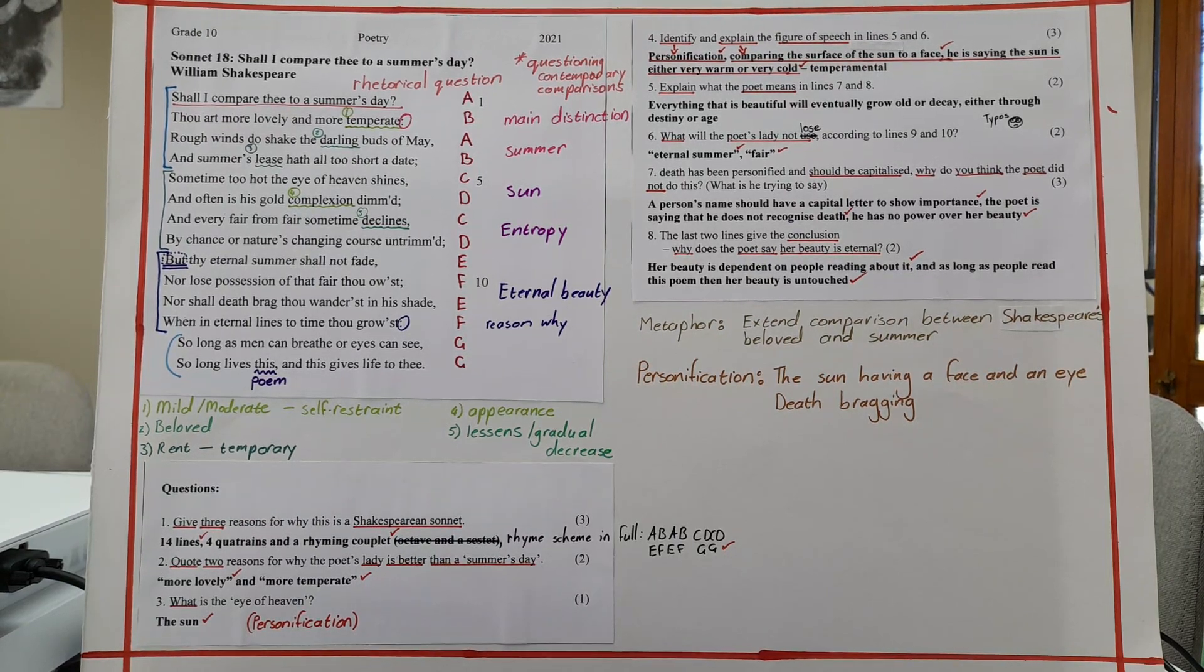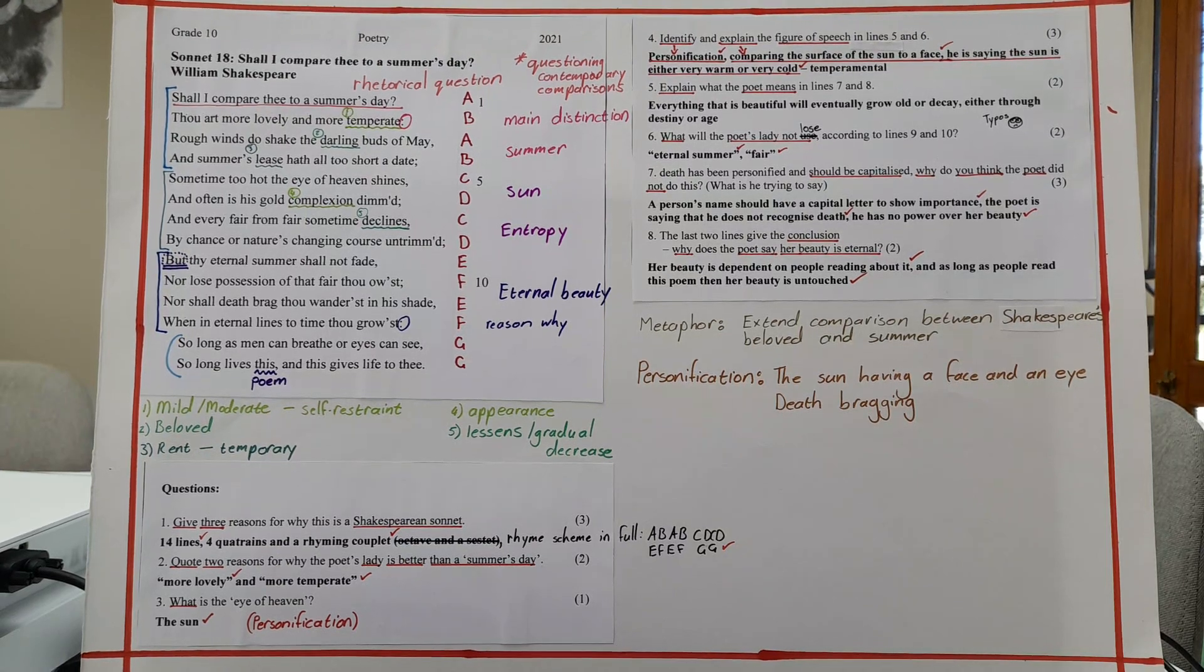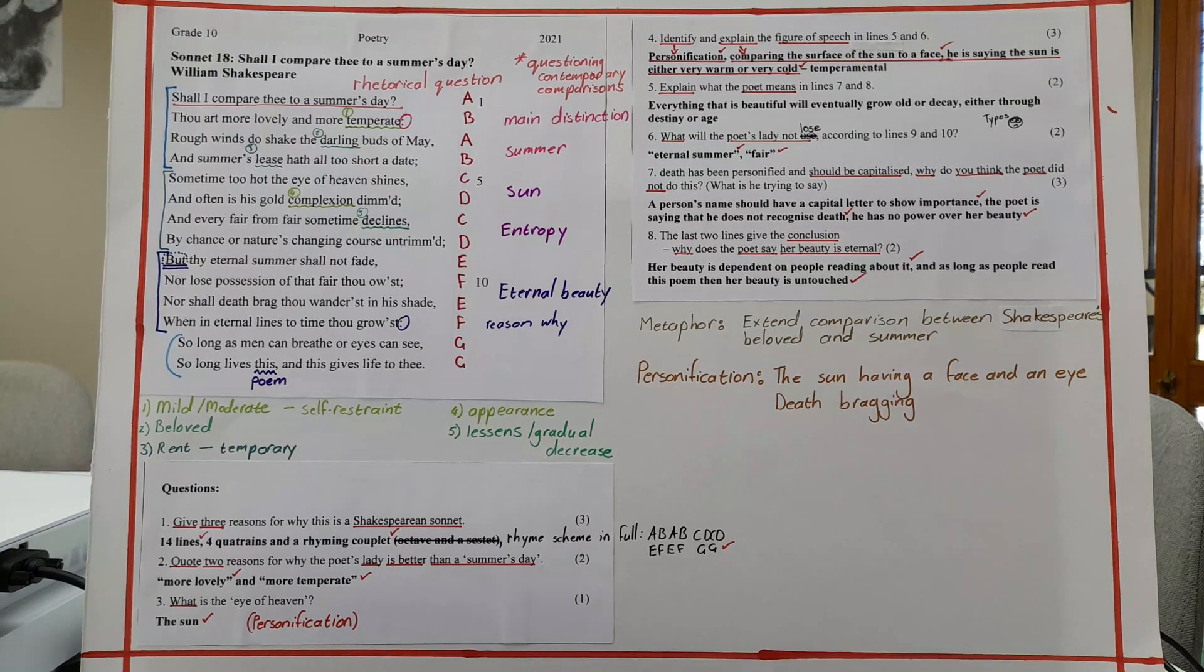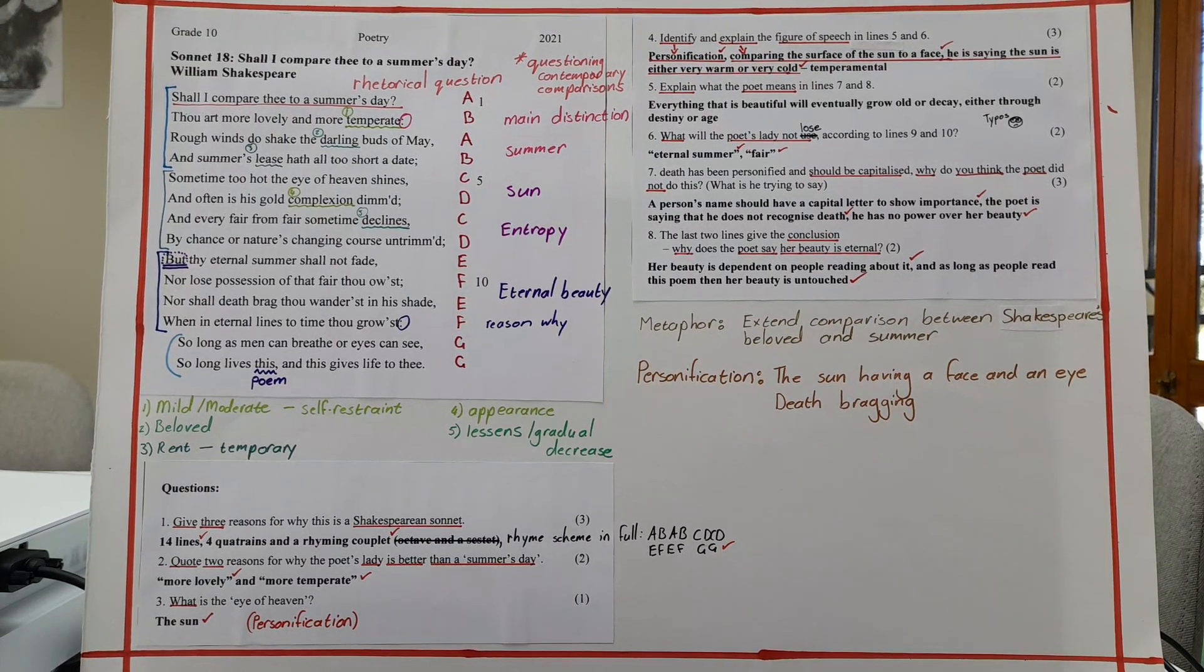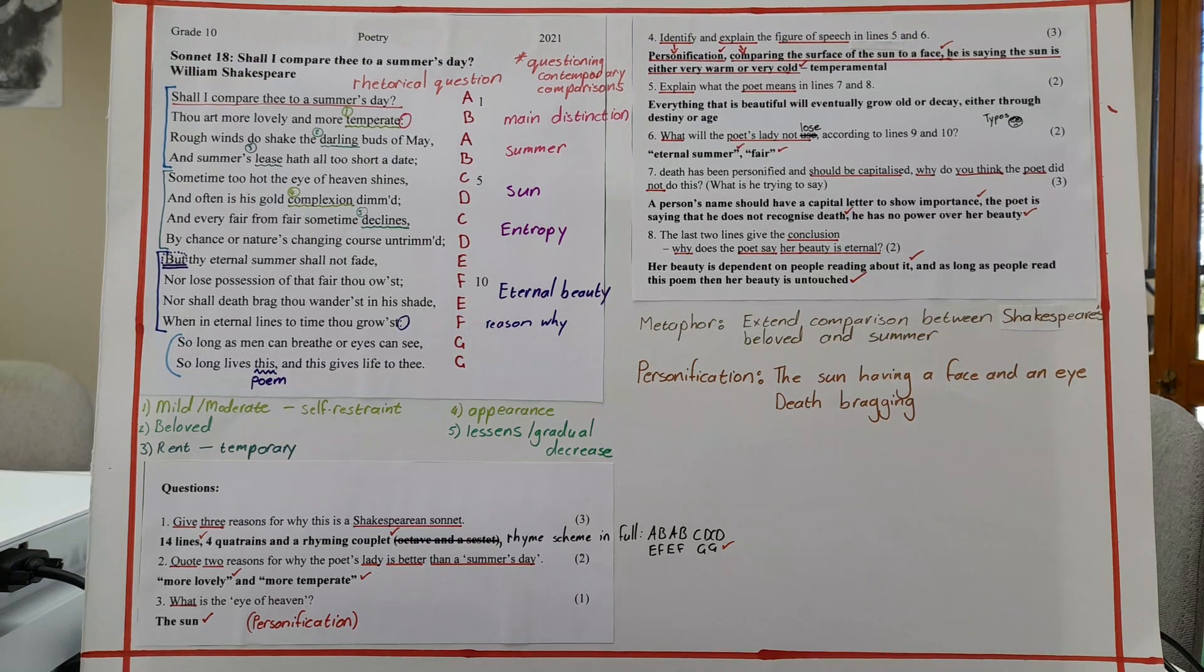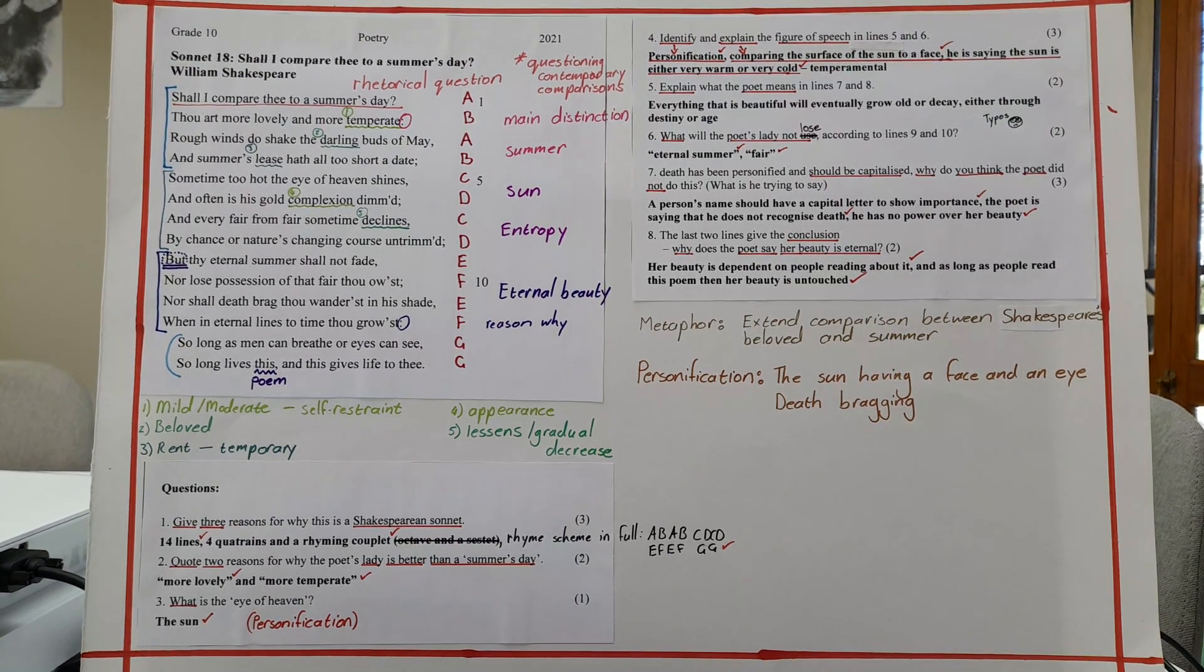Number two, quote two reasons for why the poet's lady is better than a summer's day. So number one, more lovely. Number two, more temperate. Number three, what is the eye of heaven? It's the sun. If they asked you to explain it, then you can say that it's personification and the sun is being compared to an eye from a human.